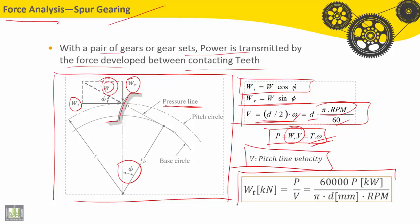The Wt, tangent force in kilonewton, is equal to the power divided by the velocity, or the pitch line velocity. The formula is the following: it is equal to 60,000 P in kilowatt, divided by pi into d in millimeters into angular velocity with rpm.